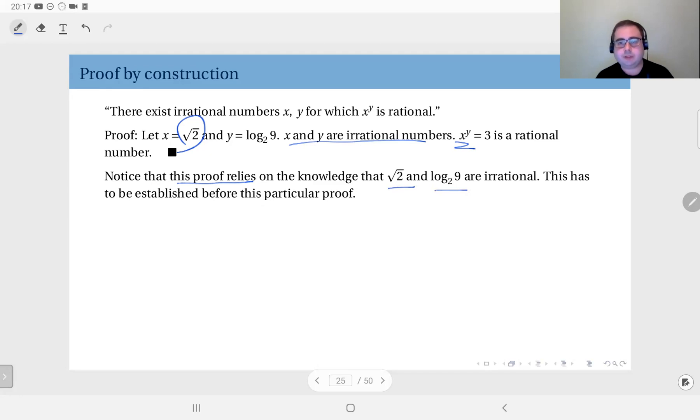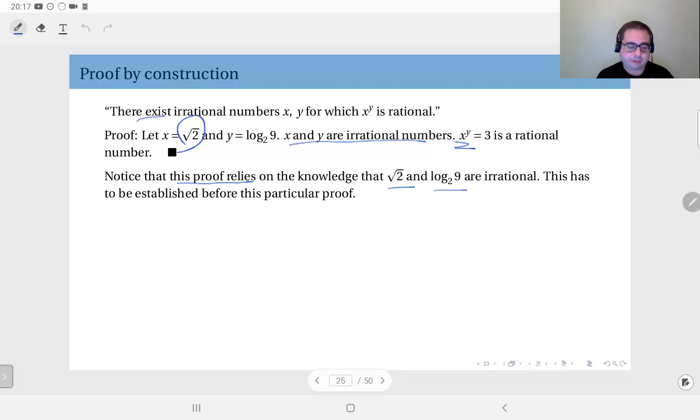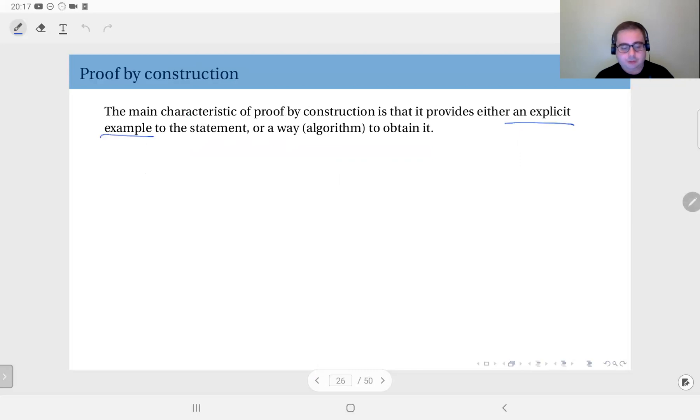Proof by construction. The main characteristic of this method is it provides either an explicit example, as we have just seen—this x along with this y satisfy this, so you are done because it was an existence theorem. Just one example suffices because it just says exists, so proof by construction is a very suitable candidate for those type of arguments.